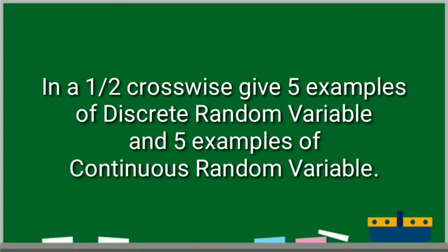In a one-half crosswise, give five examples of discrete random variable and five examples of continuous random variable.